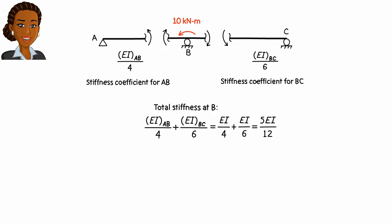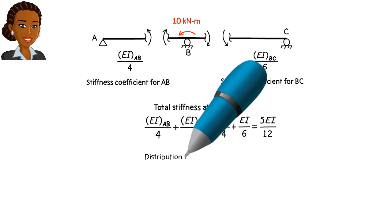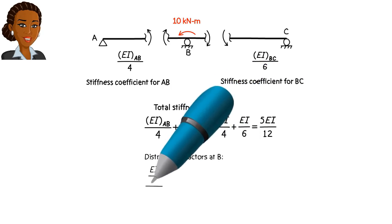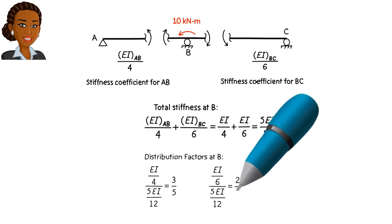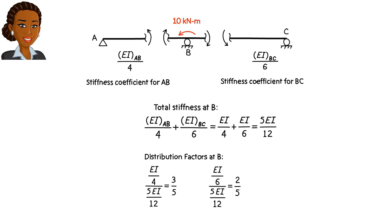Then, any bending moment present at joint B is distributed between members AB and BC using the following distribution factors. Remember AB absorbs three-fifths of the moment. Member BC absorbs two-fifths of the moment. Note that the sum of the distribution factors equals 1. This is true for every joint in every structure, without exception.